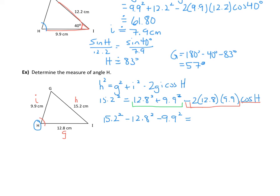I'll compute 2 times 12.8 times 9.9 separately to avoid writing too many digits — and that gives negative 253.44 times the cosine of angle H.